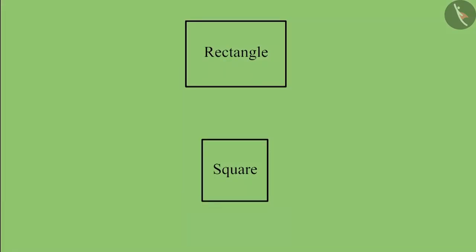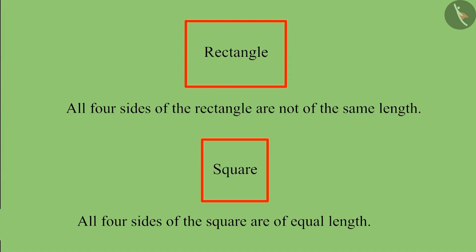So children, now you can also distinguish between square and rectangle, right? Both rectangle and square are made of four sides. But the shape whose four sides are of equal length is called a square. And this is the rectangle.